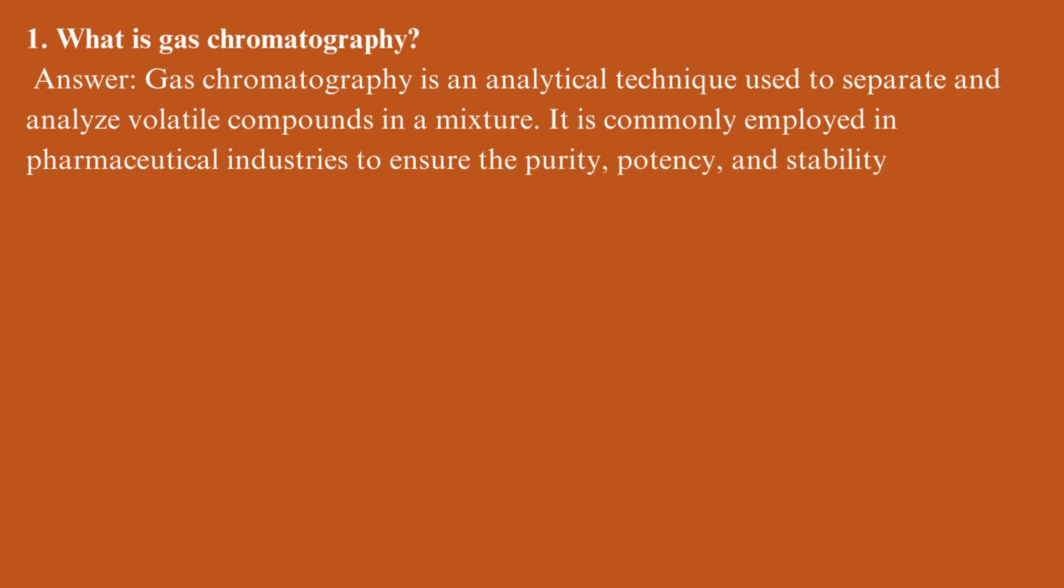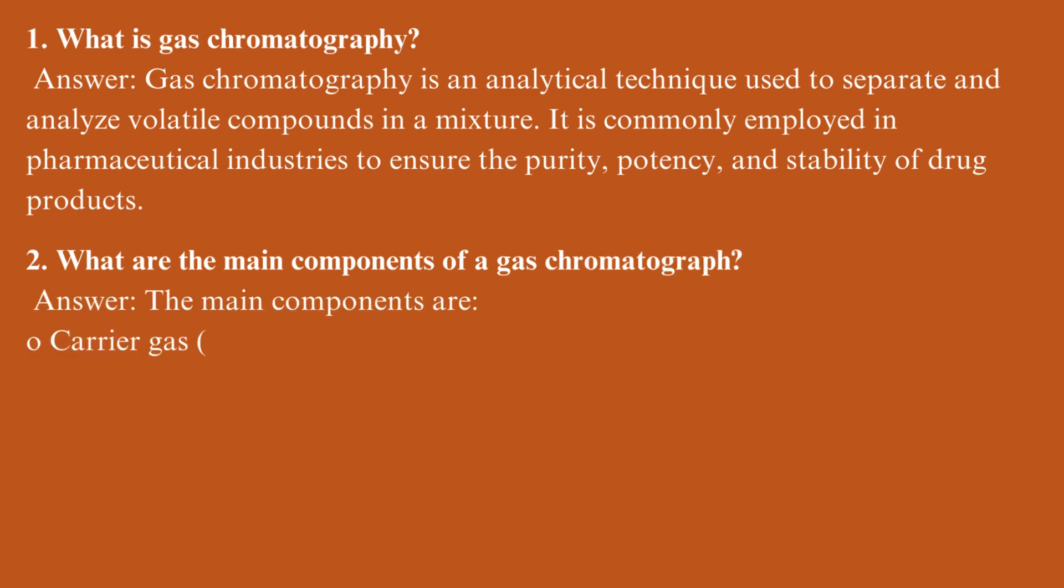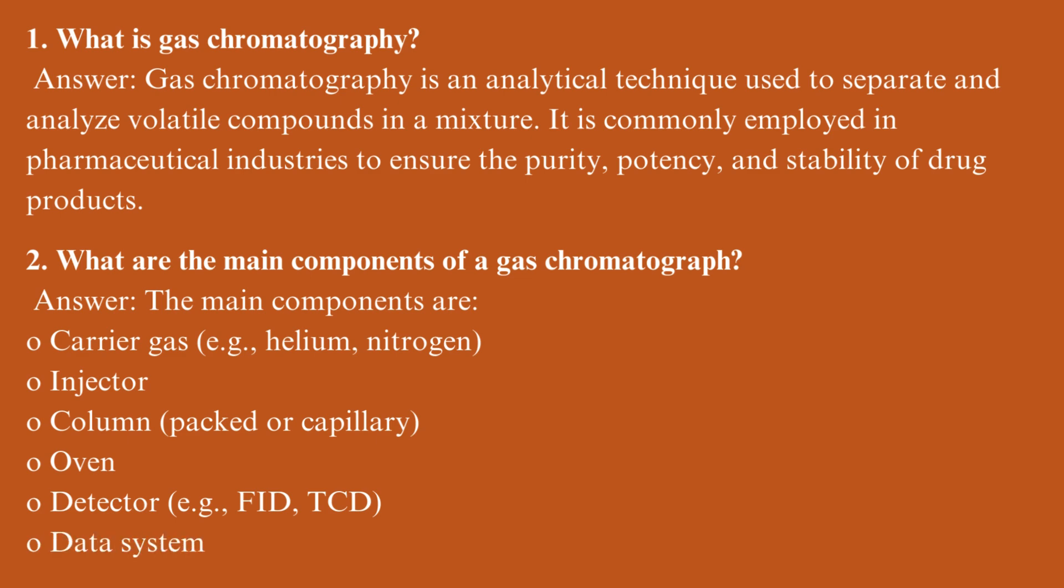What are the main components of a gas chromatograph? The main components are: carrier gas, example helium or nitrogen, injector, column (packed or capillary), oven, detector (example FID or TCD), and data system.